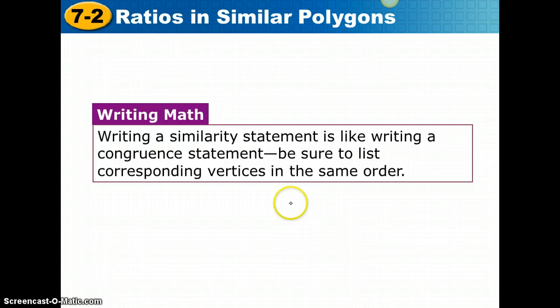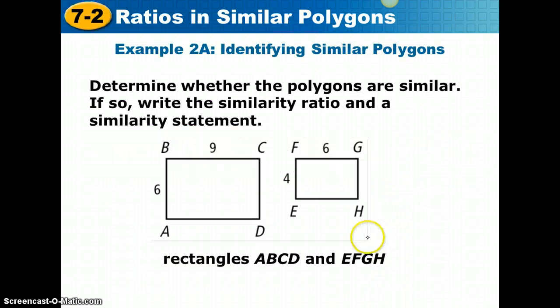Writing a similarity statement is like writing a congruence statement. Be sure to list the corresponding vertices in the same order. In example 2A, we're going to determine whether these polygons are similar. If so, we should write the similarity ratio and the similarity statement.